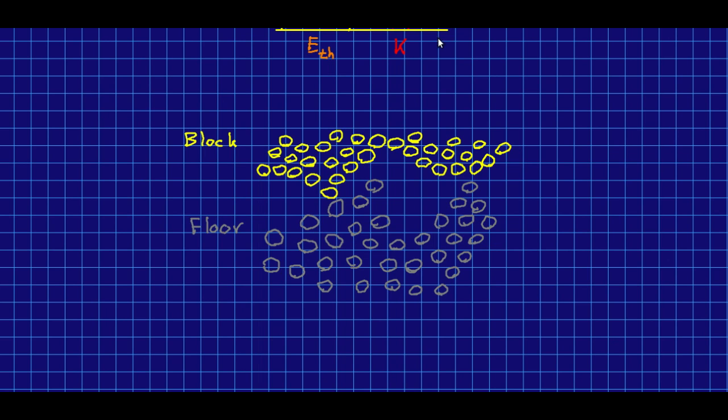The reason it never happens really has more to do with probability than anything else. But the probabilities are so staggeringly large or staggeringly small that they're basically certainties. So think of the block and the floor on the atomic scale. So here are atoms of the block, and here are atoms of the floor. And if they have a whole lot of thermal energy, then they're all jiggling around essentially randomly. And so every atom is at any point moving in some velocity in a more or less random direction.